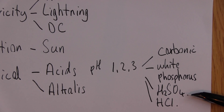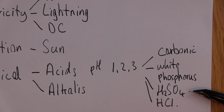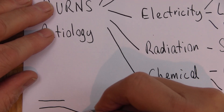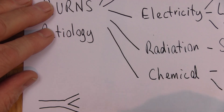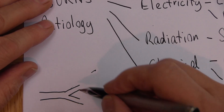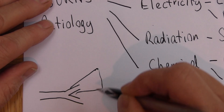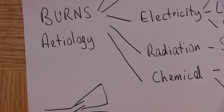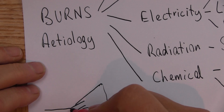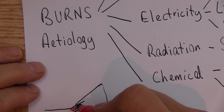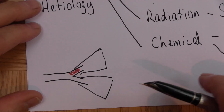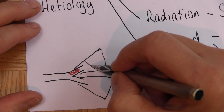Acids damage the tissues directly, but they also cause what we call coagulation necrosis. The acids can induce blood clotting in the normal blood vessels taking blood to a tissue. That coagulation means blood is no longer getting to the tissue, so we get an area of necrosis.